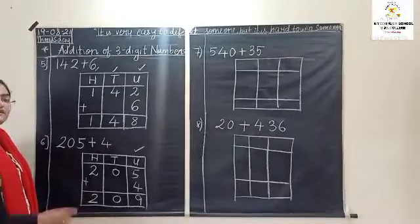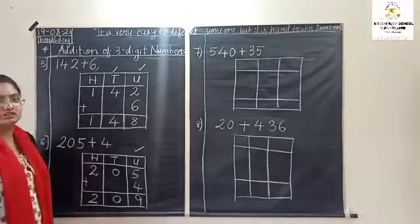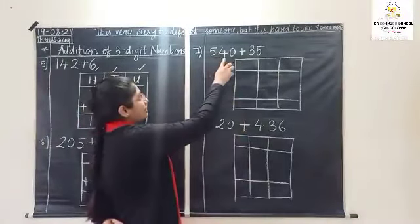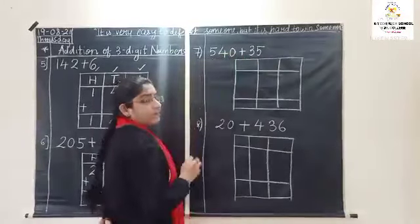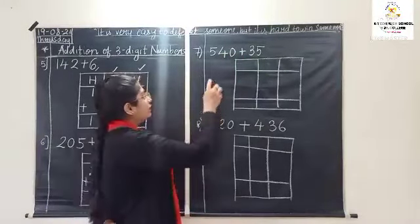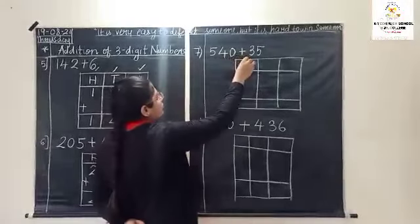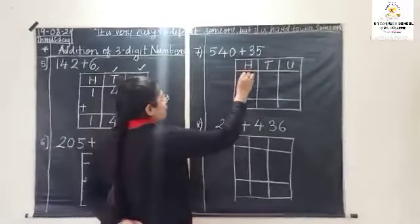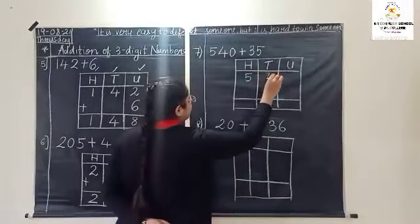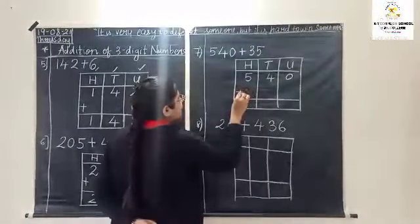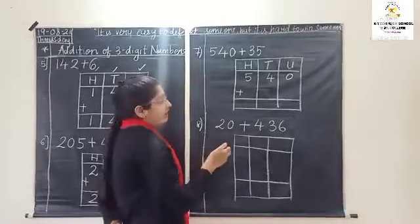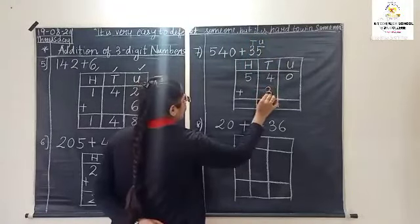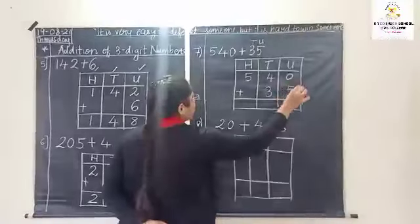Students, I hope you all have understood how to do the addition. Now come to the next question: five hundred and forty plus thirty-five. How many digit number is there? One, two, three. So arrange the number in this table — hundreds, tens and units. Thirty-five is a two-digit number, tens and units. So three will come in tens and five will go in units place.